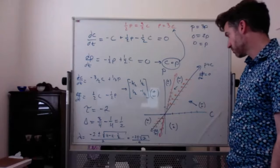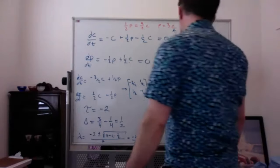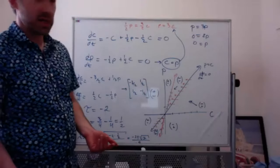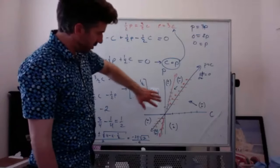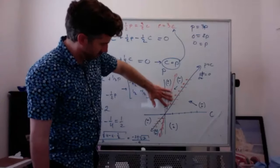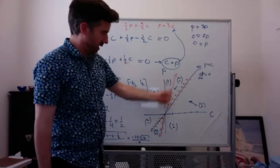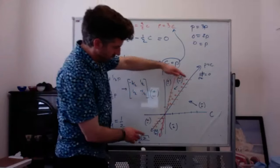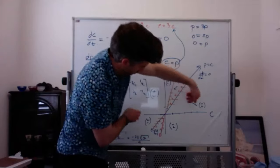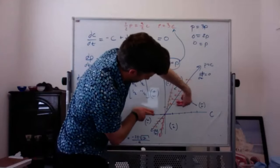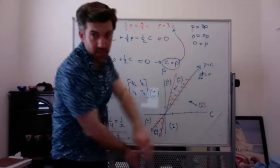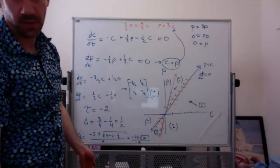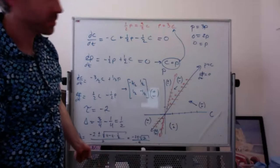Whereas if it were a saddle, the vertical parts would have some pointing up and some pointing down — going in but then going away. That's more of a saddle behavior compared to what we see here.